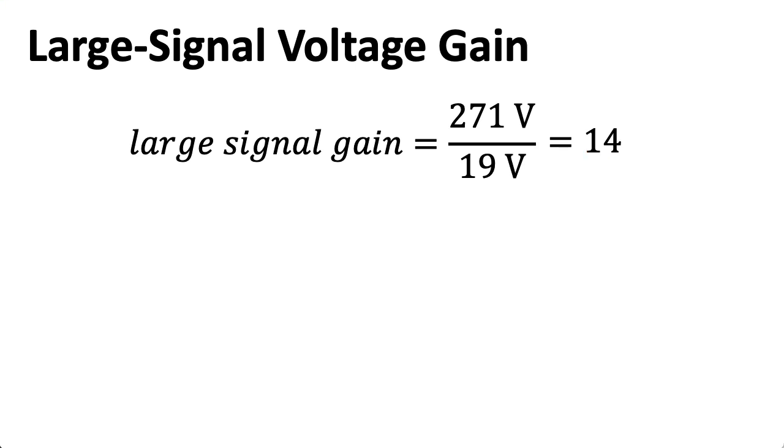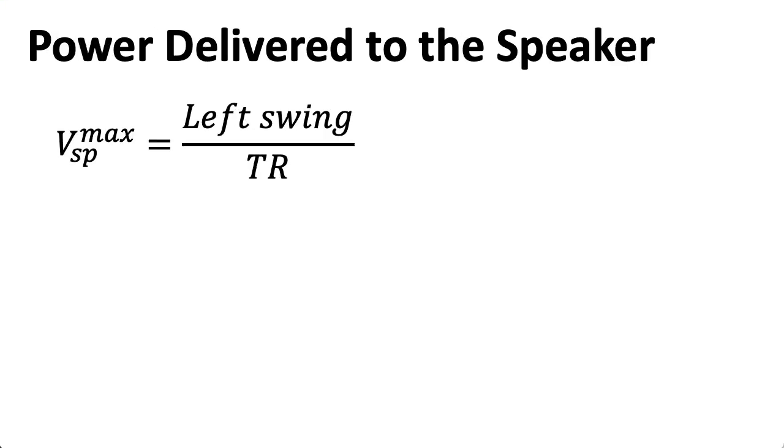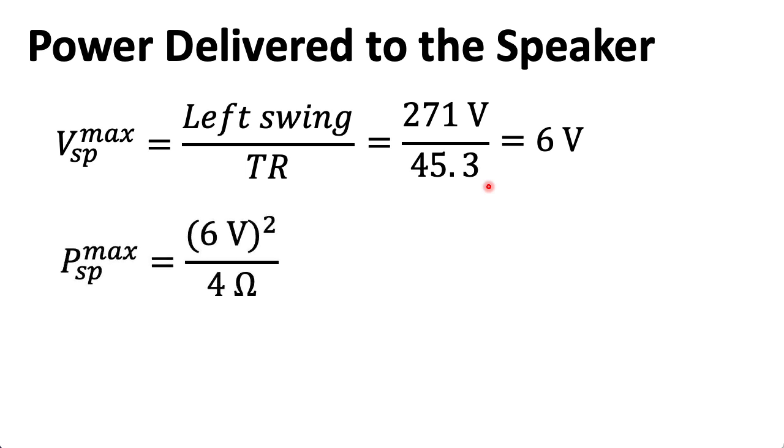And let's see just how much power the speaker gets. So, the left swing is 271 volts. That gives us a max voltage on the tube side. But we need to divide that by the turns ratio of the transformer, which in the previous lecture we determined was 45.3, to give us the actual max voltage on the speaker side of 6 volts. So, if I take 6 volts, and I square that, and divide it by 4 to get a power figure, I get 9 watts.